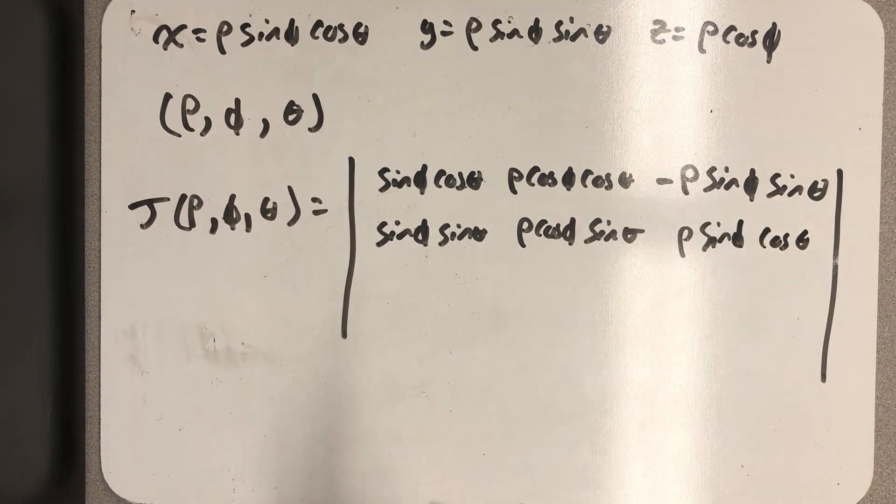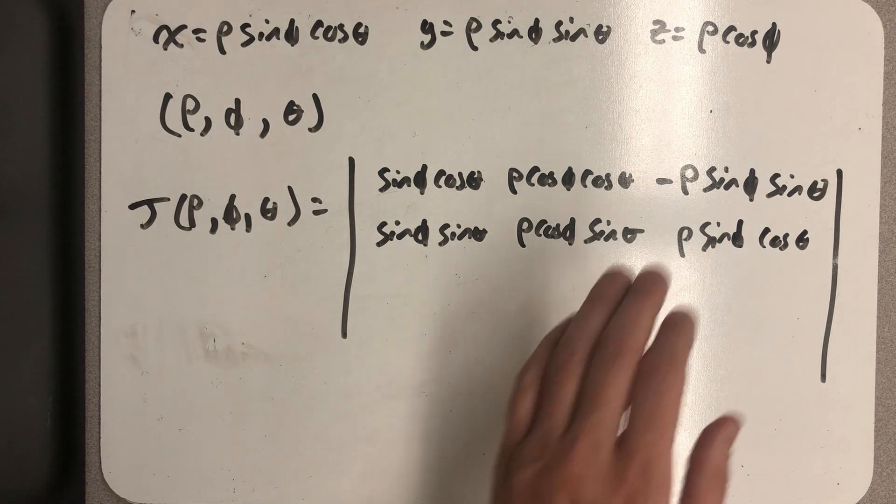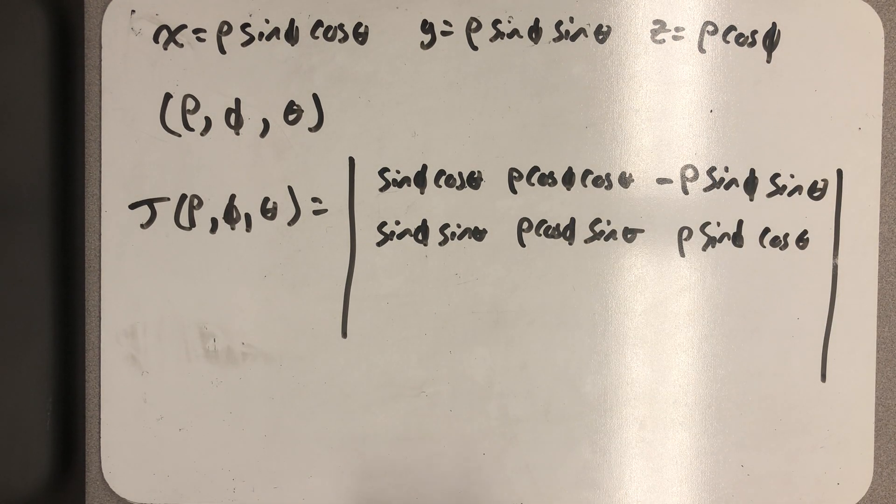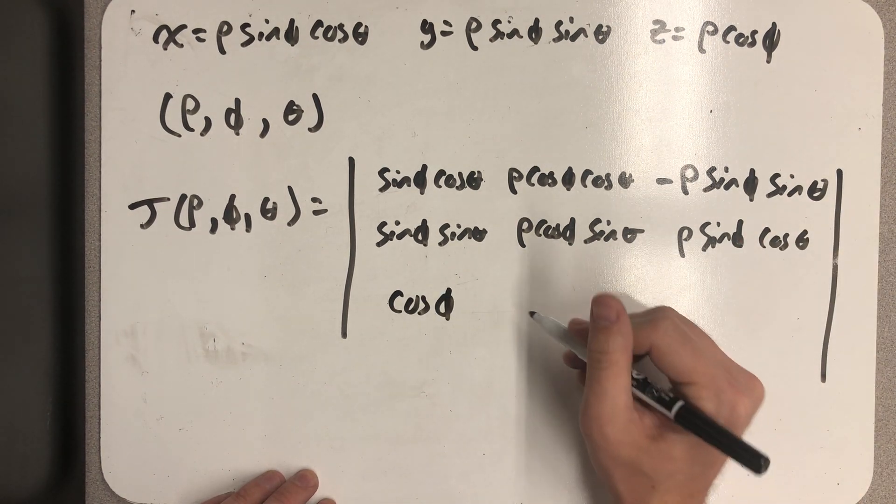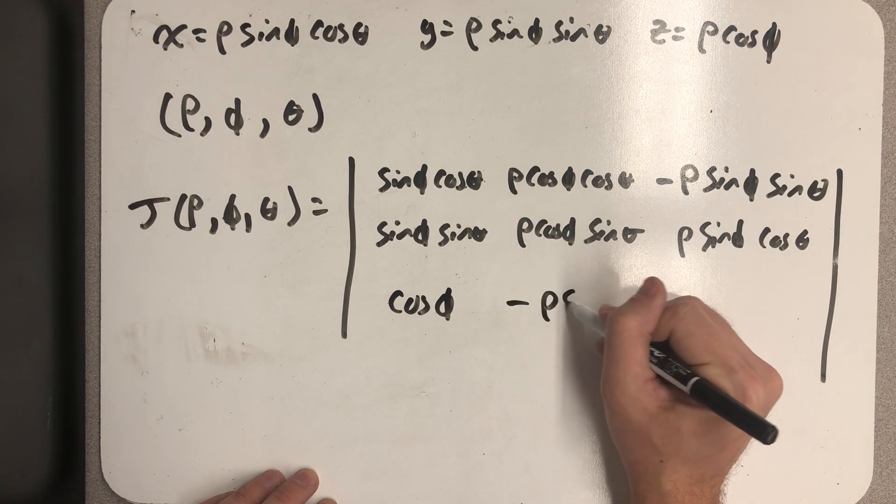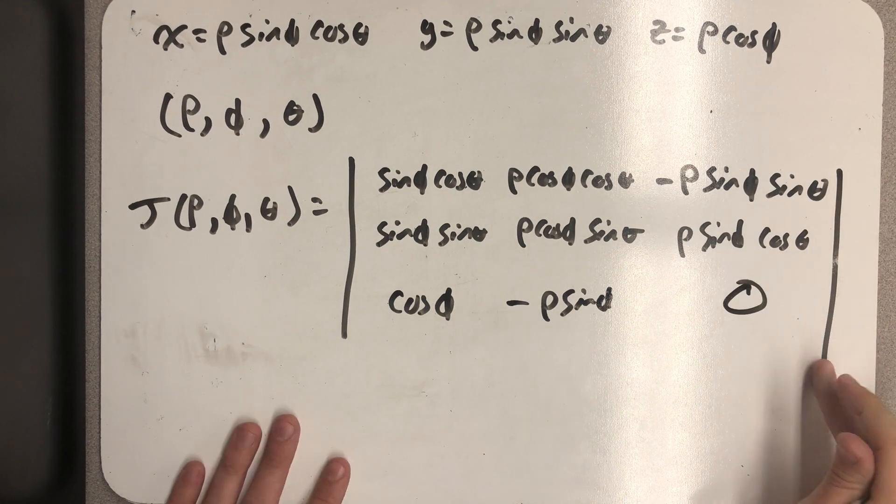Now finally, in the last column, I take the partial of z with respect to rho, so cosine phi, with respect to phi, minus rho sine phi. And then finally, with respect to theta, I get a zero.